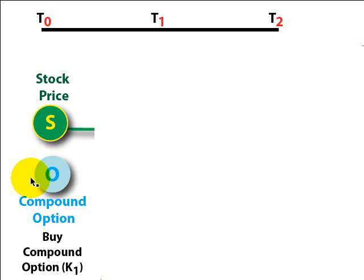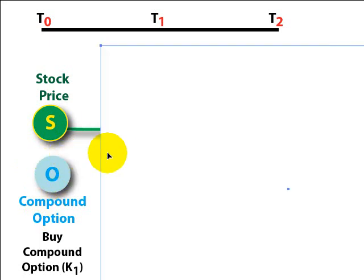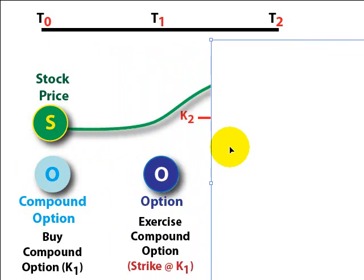Other variants are we could purchase a call option on a put, a put on a call, or a put on a put. So at time 0 today, we purchased the compound option. That gives us the right going forward to exercise that compound option.